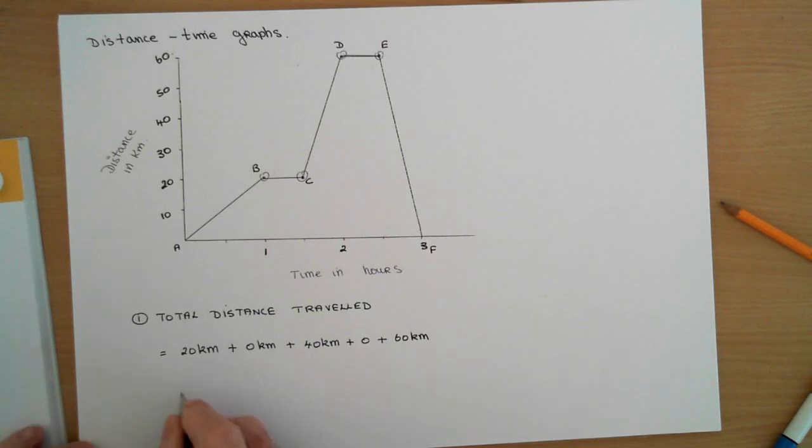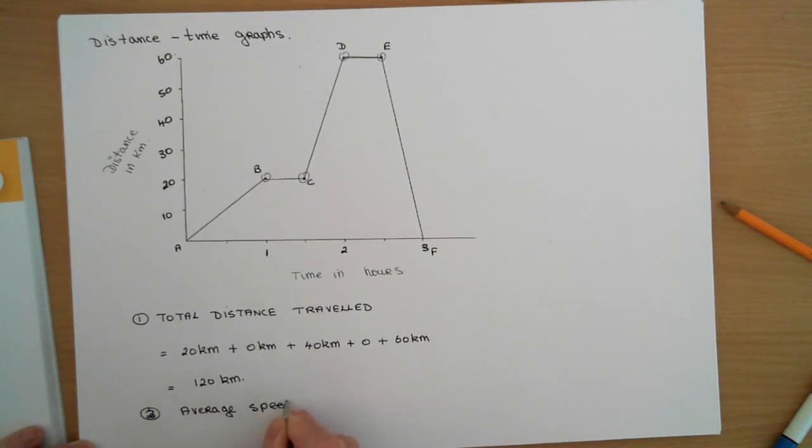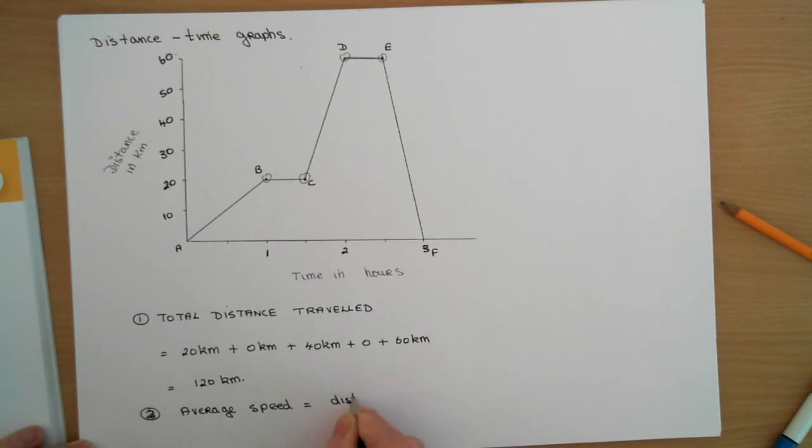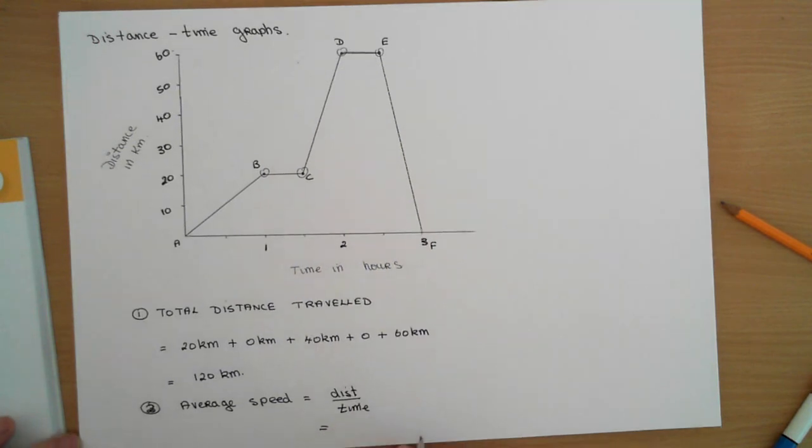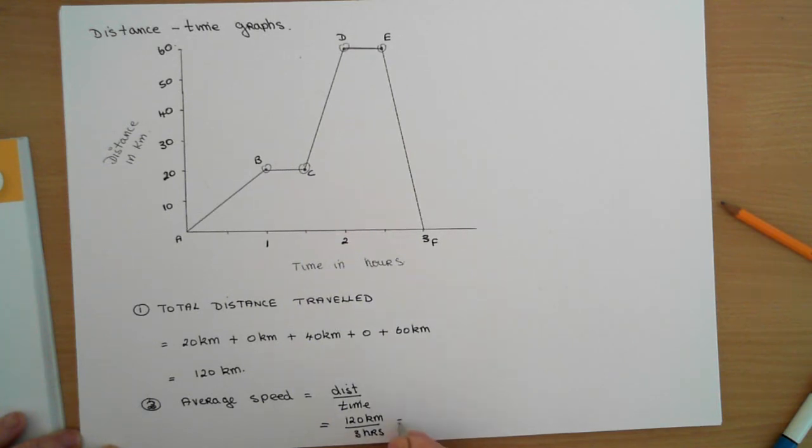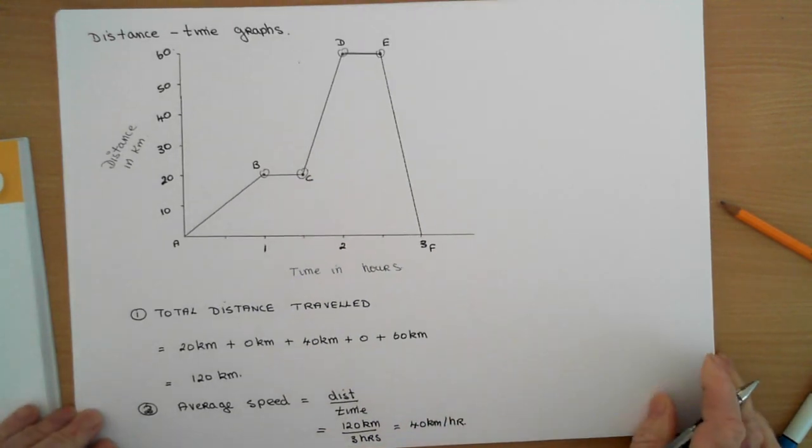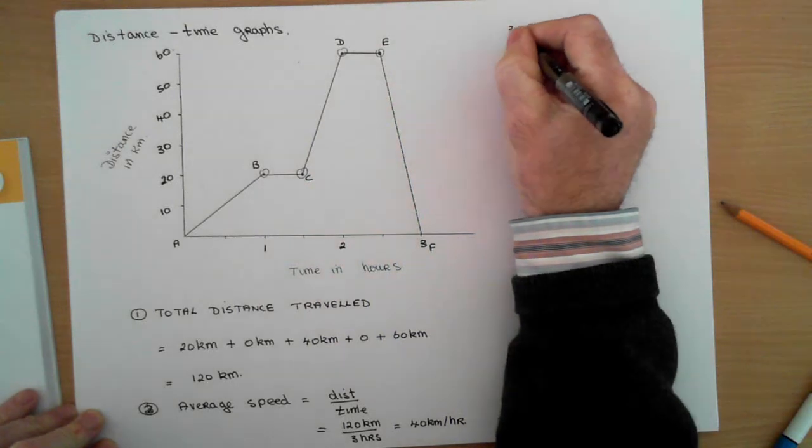What's the average speed? Well, the average speed is the distance divided by the time. What was the total distance they traveled? 120 kilometers. And how long did that take? Three hours. So the average speed was 40 kilometers per hour.